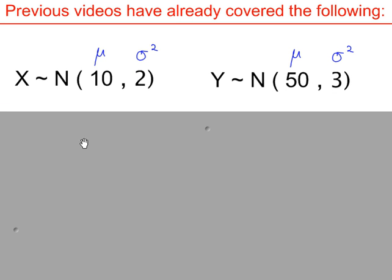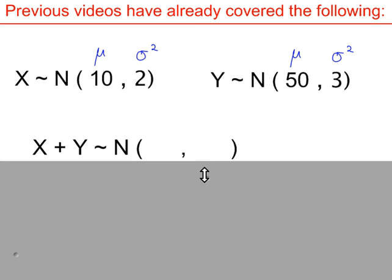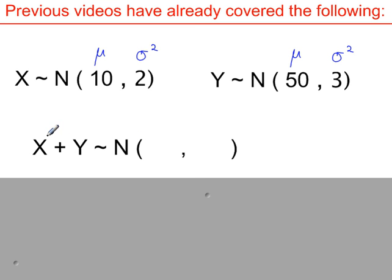Previous videos have already covered the following. We have two independent normal variables. If we add them together, we add the mean of x to the mean of y: 10 plus 50, so you get 60. This is the new mean. And the variance of this normal variable, x plus y, is 2 plus 3. We add variances.